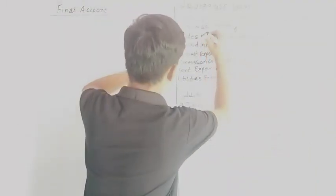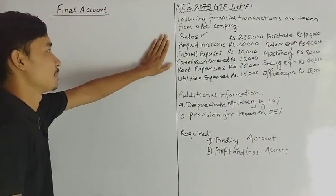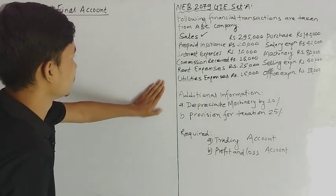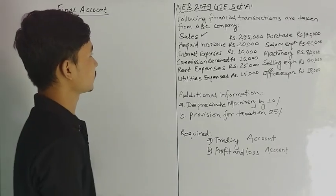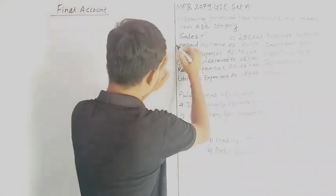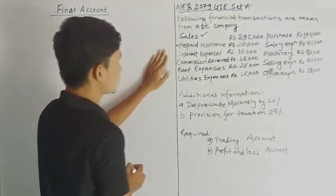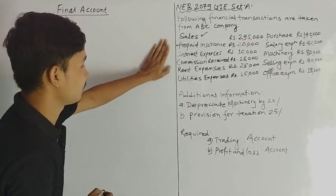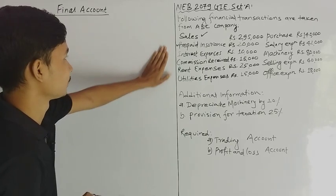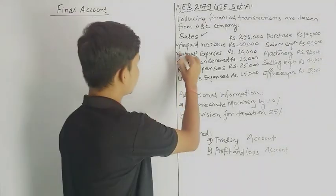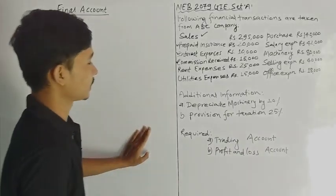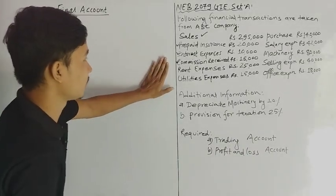This is the sale of our sales. This is the trading account for direct sales. This is the direct sales. This is the prepaid insurance. This is the balance of the bank. This is interest expenses — interest expenses go to profit and loss account. Commission received goes to the profit and loss account.